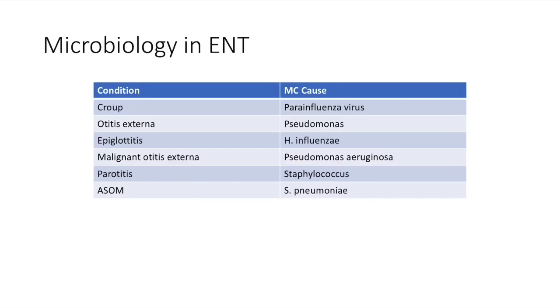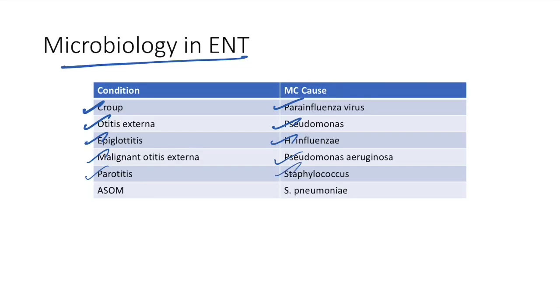Quick microbiology review in ENT: croup is most commonly caused by parainfluenza virus; otitis externa by Pseudomonas; epiglottitis by Haemophilus influenzae; malignant otitis externa by Pseudomonas aeruginosa; parotitis by Staphylococcus; acute suppurative otitis media by Streptococcus pneumoniae.